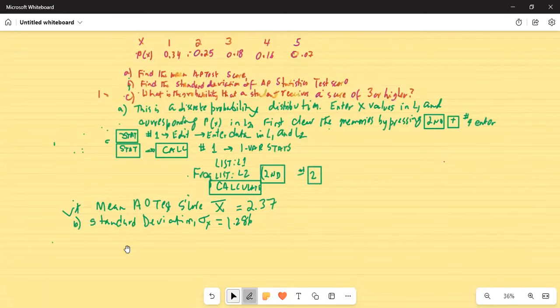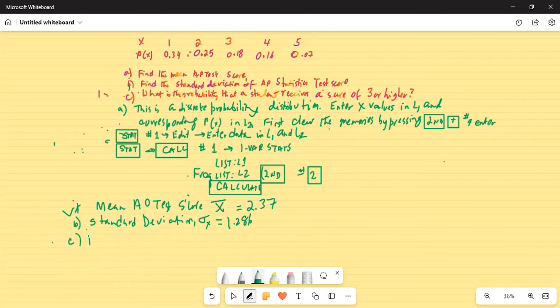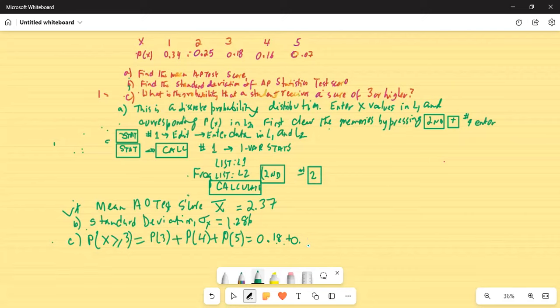What is the probability that a student will receive a score of 3 or higher? So part C, probability of X greater than or equal to 3, which is probability of 3 plus probability of 4 plus probability of 5. And that is equal to 0.18 plus 0.16 plus 0.07.